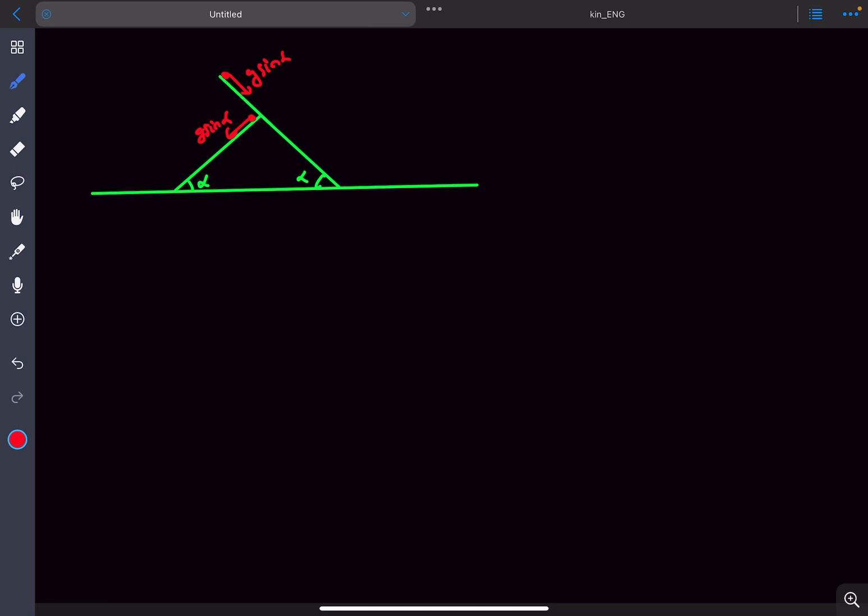Now, as we know the acceleration is constant, we can use s equals ut plus half a t squared. Let's say this length of the longer slide is capital L and the smaller slide is small l. So we can say L equals half g sin alpha t1 squared, this would be equation one. Similarly, small l equals half g sin alpha t2 squared, this is equation two.